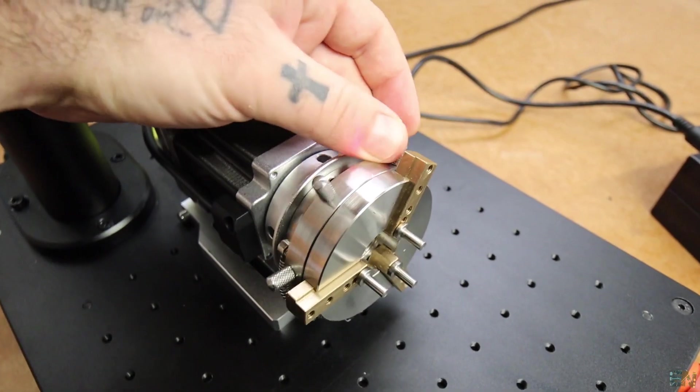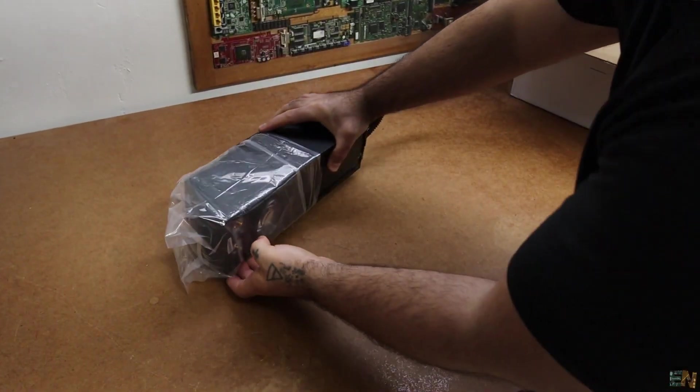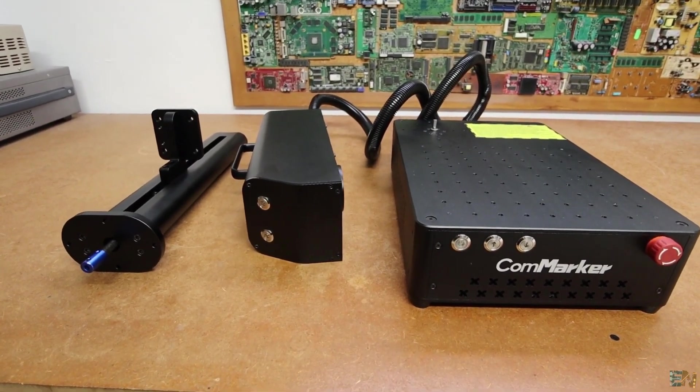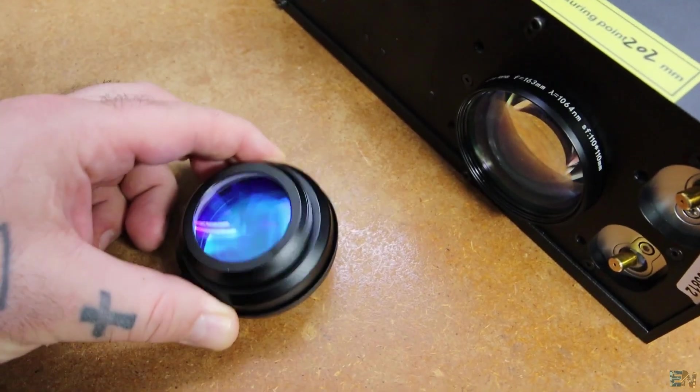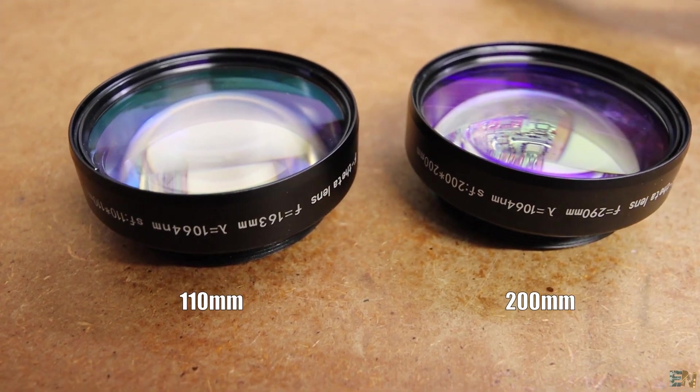Inside of the machine box we have the main laser unit, the electronics box and the metal stand. Together with the engraver you also get the 110mm lens and a 200mm lens and we will see why in a moment.